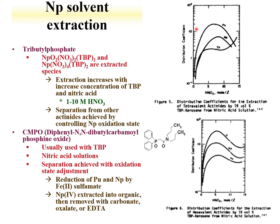Data is shown here for the extraction of tetravalent and hexavalent neptunium. CMPO, a ligand preferentially used in the Truex process, has also been studied with tributyl phosphate. Separations have been achieved with oxidation state variation, where neptunium and plutonium can be reduced and neptunium-4 can be extracted into the organic phase and then removed with carbonate, oxalate, or EDTA.